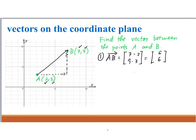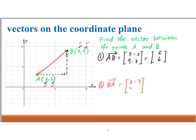Finding vector BA is similar, only that BA is the vector connecting B to A. To get the X component, we get the difference in the X coordinates from the head to the tail, so it's 2 minus 7. For the Y component, it's going to be 3 minus 9. So vector BA is (-5, -6).